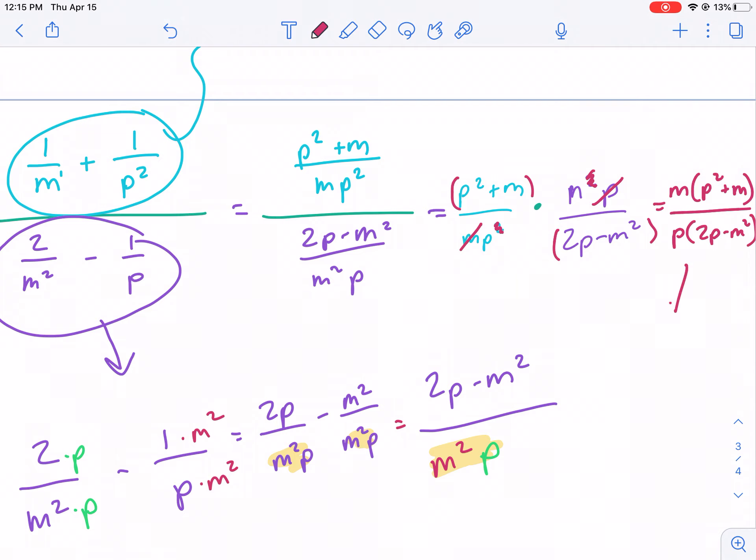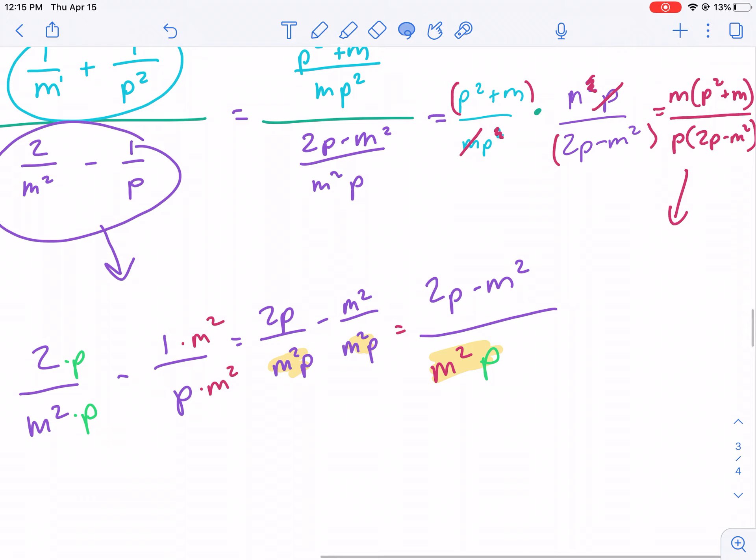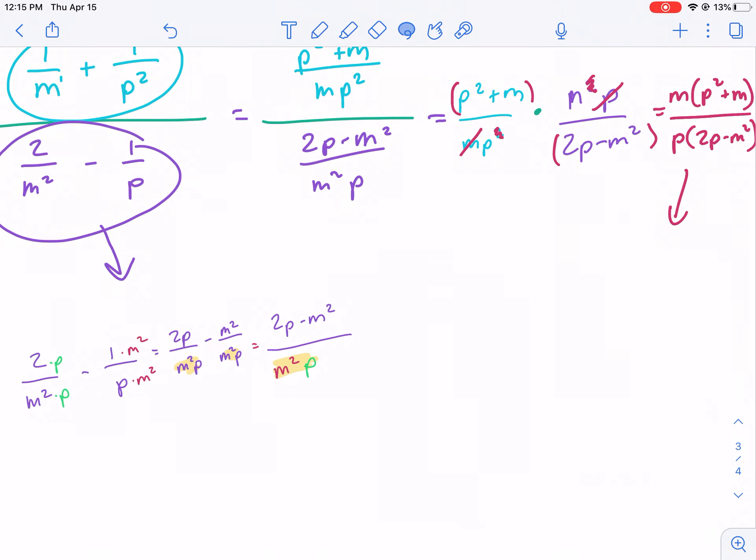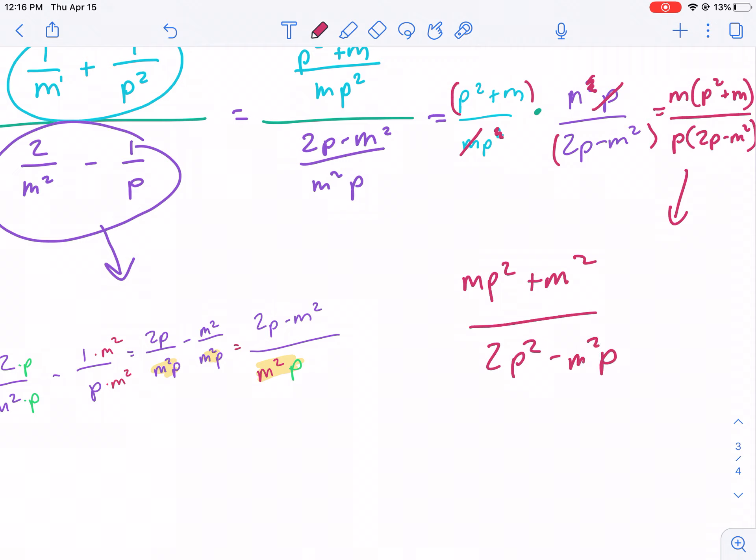I would distribute here just to have my answer a little bit more neat in expanded form. So I'm going to simplify this. And so my final answer is going to be m p squared plus m squared over 2p squared minus m squared p. And that is my final answer.